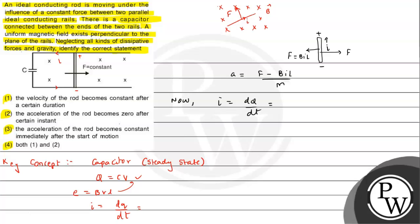Now let's calculate the value of i. Current i is dq by dt, and the charge on capacitor can be written as C into BVL. Here we need to be careful, this V is velocity. Divided by dt, so constants can be taken out, so C and B and L, and d V by dt will be our acceleration a.